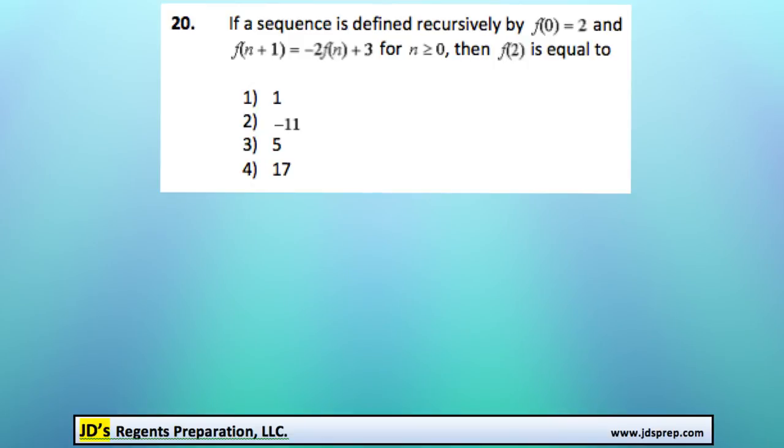Welcome to problem number 20 from the January 2015 Algebra Regents exam. If a sequence is defined recursively by f(0) = 2 and f(n+1) = -2f(n) + 3 for all positive numbers of n, then what we need to do is figure out what f(2) is equal to.